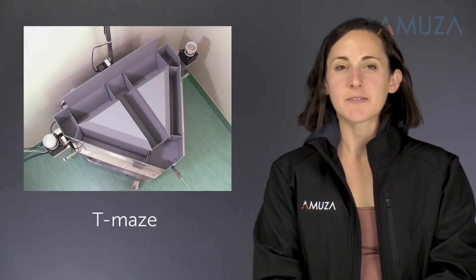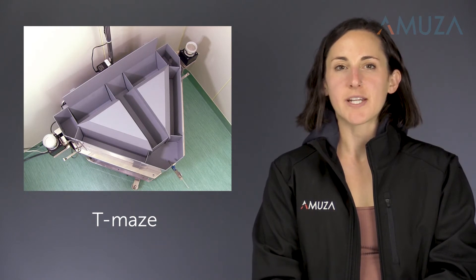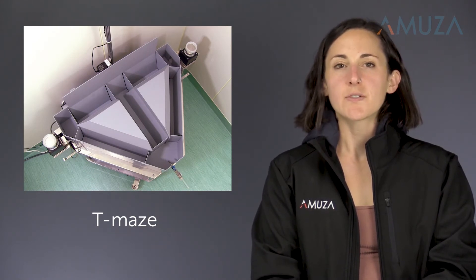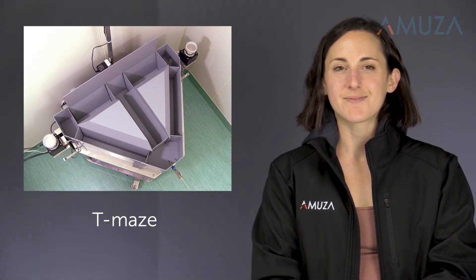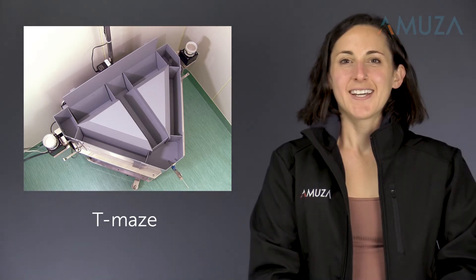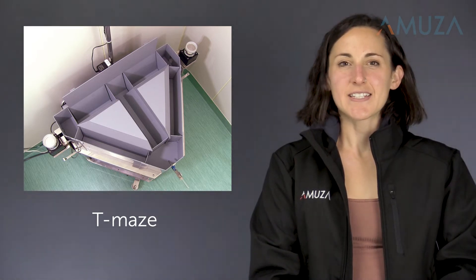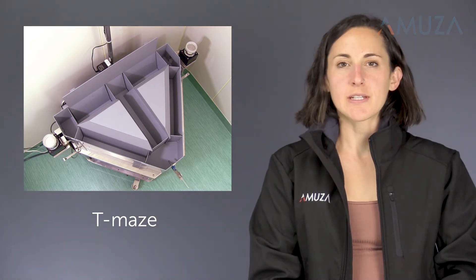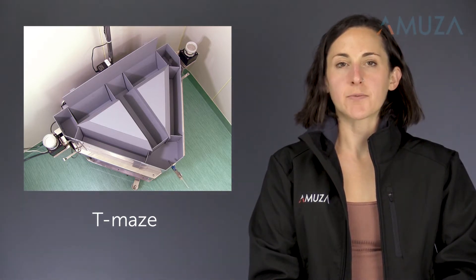The first test I am going to talk about is the T-Maze. The T-Maze is also called the spontaneous alternation test and is used to measure exploratory behavior in rodents. This test is based on the fact that rodents typically prefer to visit a new arm of the maze rather than a familiar one.